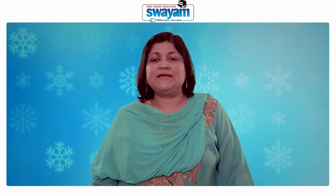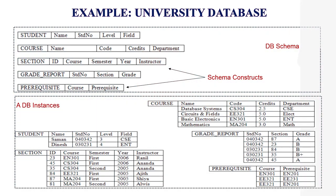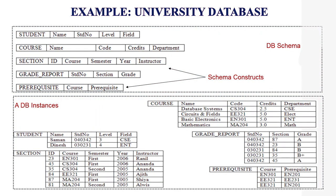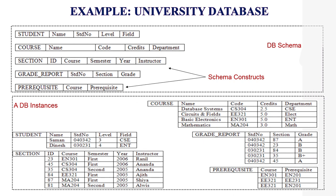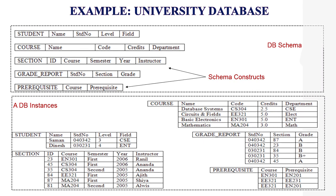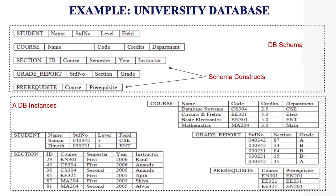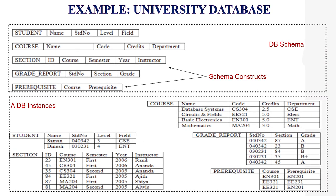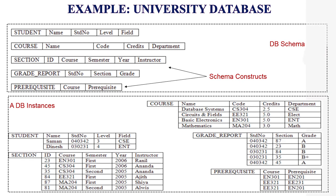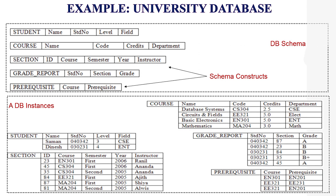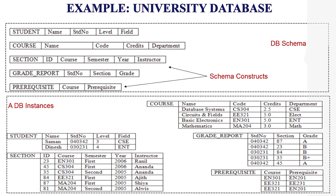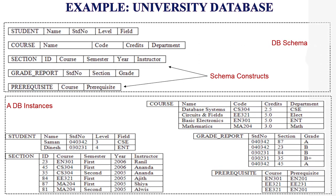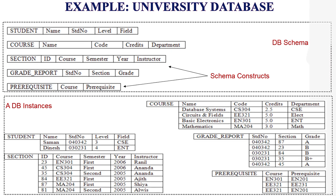Database instance is the actual content of the database at a particular point in time. A database instance is a state of an operational database with data at a given time. It contains a snapshot of the database. Database instances tend to change with time. A DBMS ensures that every instance is in a valid state, and it is similar to the value of a variable. In the diagram you can see the example of a university database with schema constructs: student, course, section, grade report, and prerequisite — collectively known as the database schema. In the second part, you can see the schema with data, which is the database instance.